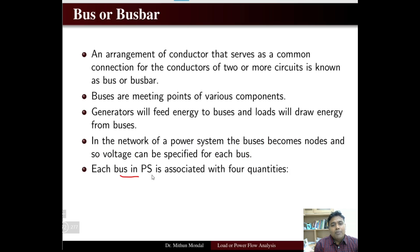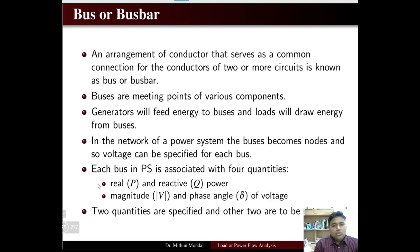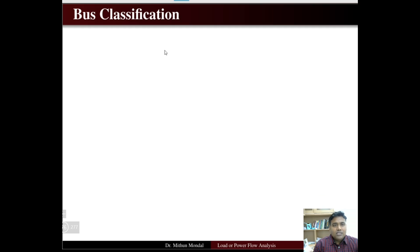Each bus in a power system is associated with four quantities: real power, reactive power, magnitude of voltage, and phase angle of voltage. Out of these four quantities, two will be specified and the other two have to be determined. Now, what is the bus classification?